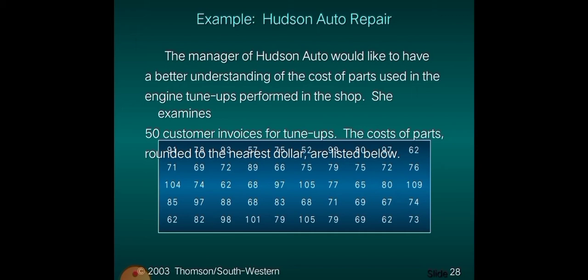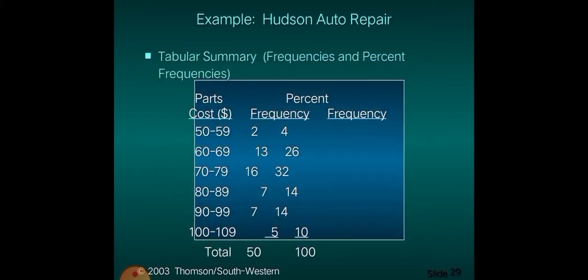Looking again at the raw data: the highest is 109 and the lowest is actually 52. So 109 minus 52, and the difference should be divided by 6 — the number of classes. 109 minus 52 divided by 6 is equal to 9.5. Round it up to 10. Therefore the class width for the 6 classes is 10.